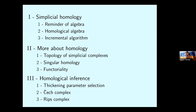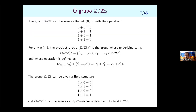The plan for today: I'll start with a reminder of algebra, then get into the definition of homology. The main protagonist is the group Z/2Z — the simplest group you can think of. It has two elements, zero and one, with addition where one plus one equals zero. We also need the product group: taking Z/2Z to the power n gives n-tuples of zeros and ones, with coordinatewise addition.